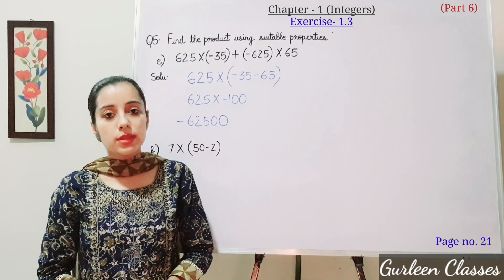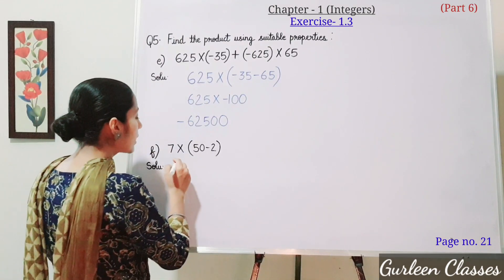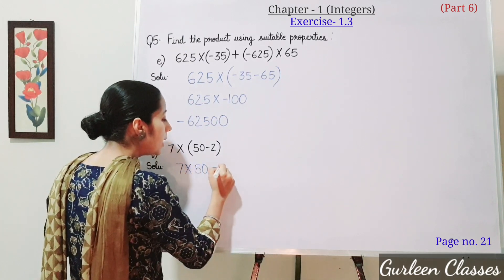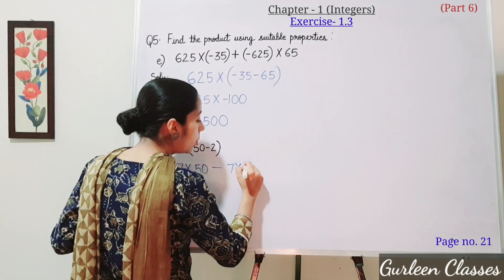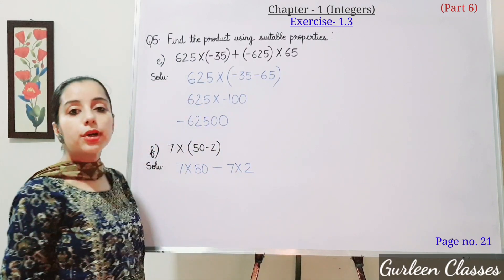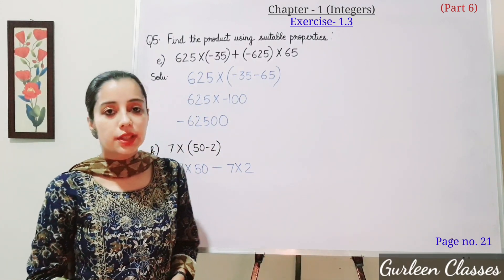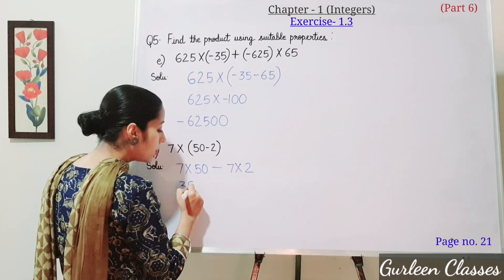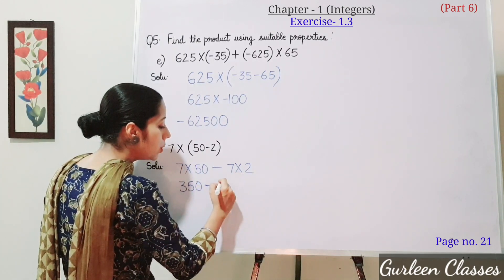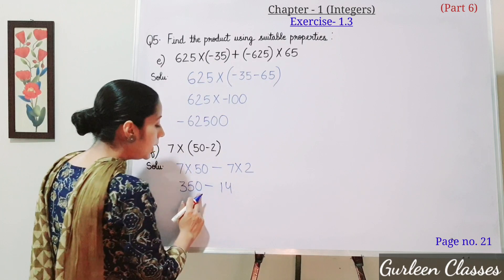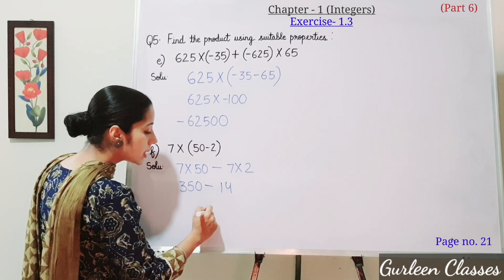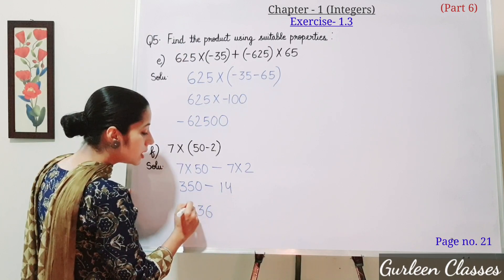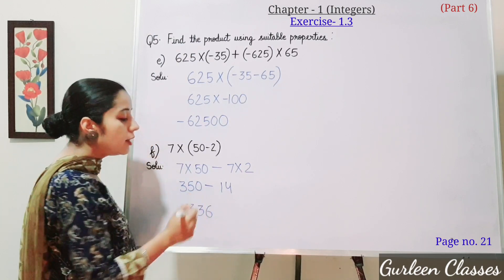Part F: 7 into (50 minus 2). Using distributive property over subtraction, we open the bracket: 7 into 50 minus 7 into 2. That gives 350 minus 14, which equals 336. Parts G and H will be homework — use the properties in the same way.